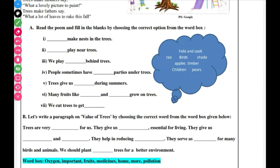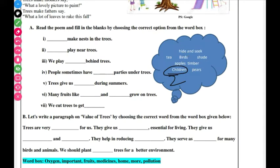The second question: who makes a nest in trees? The answer is children. We play dash behind trees — we play hide and seek behind trees. Hide and seek means to hide and seek.